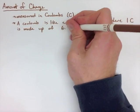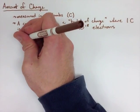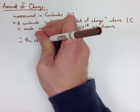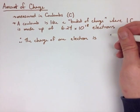Looking at this, we can find out that the charge of 1 electron is negative, because we know electrons are a negative charge, 1.602 times 10 to the negative 19 Coulombs.